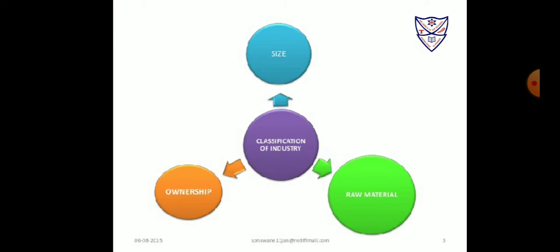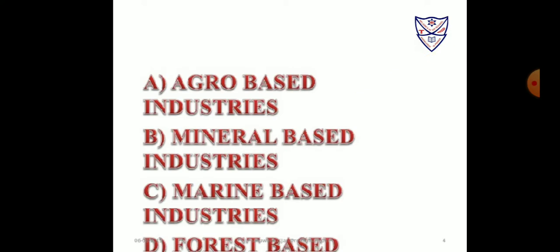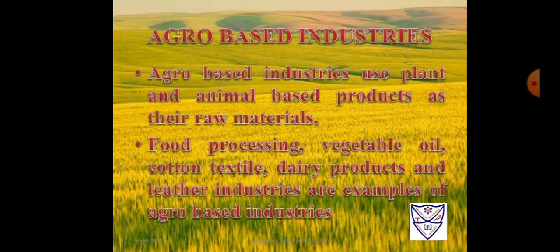Depending on the type of raw material used, industries are classified into: agro-based industry, mineral-based industry, marine-based industry, and forest-based industry. Agro-based industries use plant and animal-based products as raw materials. Examples of such industries include food processing, vegetable oil, cotton textile, dairy products, and leather industries.